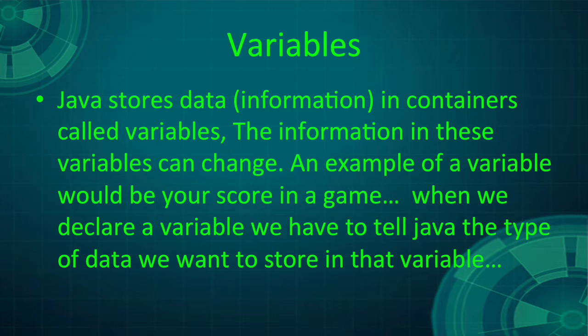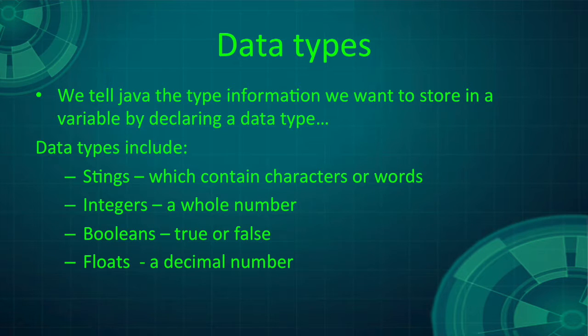Now let's get a little more technical. Let's talk about variables. Java stores data in containers called variables. The information in these variables can change — an example of a variable would be your score in a game. When we declare a variable, we have to tell Java what type of data we want to store in that variable. That's where data types get involved — they tell Java what kind of data it's going to store in the variable.